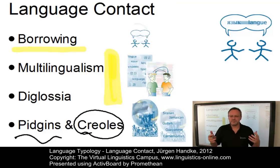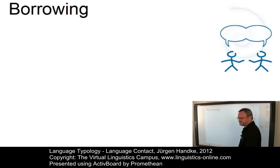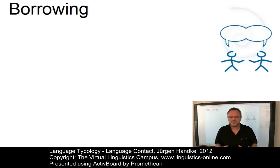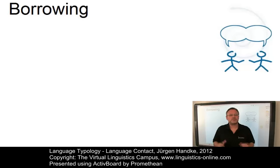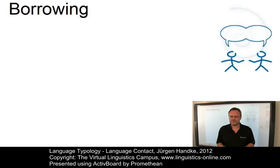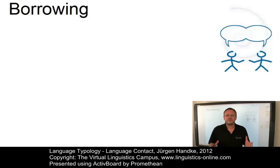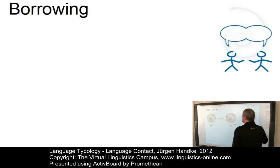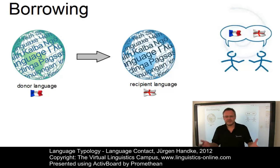Let us start with borrowing. When languages come into contact, they tend to take words from one another and make them part of their own vocabulary. These words are known as loanwords and the process is referred to as linguistic borrowing. The situation during the Middle English period from 1100 to 1500 is a good example, where numerous French words entered the English language.